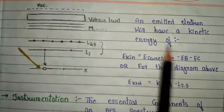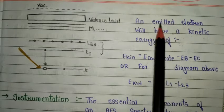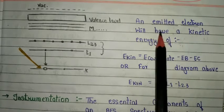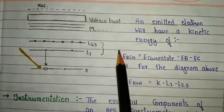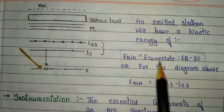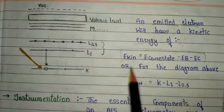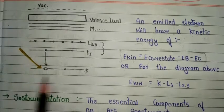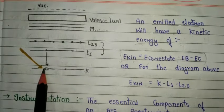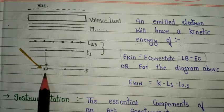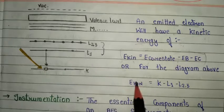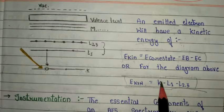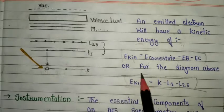One important point: the emitted Auger electron has a characteristic kinetic energy. We can find this kinetic energy using the formula: kinetic energy equals E(core state) minus EB minus EC. From the diagram, which shows the K shell as the inner shell and the L1, L2, L3 shells, the kinetic energy formula is: E(kinetic) = K minus L1 minus L2,3. That is the main formula for kinetic energy in Auger electron spectroscopy.